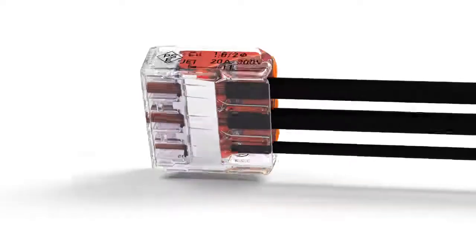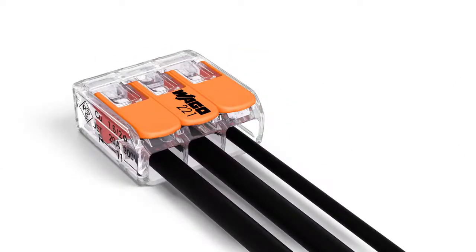A gas-tight contact point provides a durable and secure connection between conductor and current bar. The completely closed housing covers all live parts or conductors, providing a high level of protection against accidental contact.